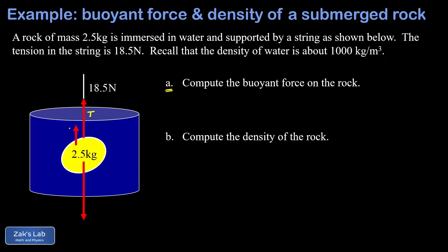One of them is just the tension in the string, I'm going to call that T, and we know that's 18.5 newtons. The other upward force on the rock is the buoyant force caused by the displaced fluid in this container, which is water.